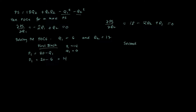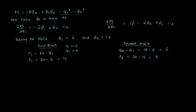For the second block, the quantity sold is Q2 minus Q1 — because the consumer already purchased Q1 — so that's 12 minus 6, equal to 6 additional units. The optimal price for the second block is P2 = 20 minus Q2 = 20 minus 12 = 8, which is lower than 14.